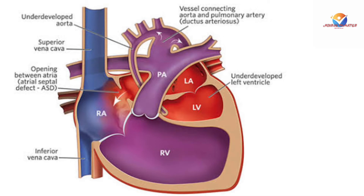Hypoplastic left heart syndrome is a congenital heart defect in which the left side of the heart does not fully develop, due to underdevelopment of the mitral valve, left ventricle, aorta, and aortic valve. There is not enough blood pumped from the left ventricle to meet the baby's demand. Surgery does not cure hypoplastic left heart syndrome but restores heart function. Surgery is done in three stages: the first stage is the Norwood procedure, the second stage is the Bidirectional Glenn procedure, and the third stage is the Fontan procedure. The first stage — Norwood procedure — is done within the second week after birth.